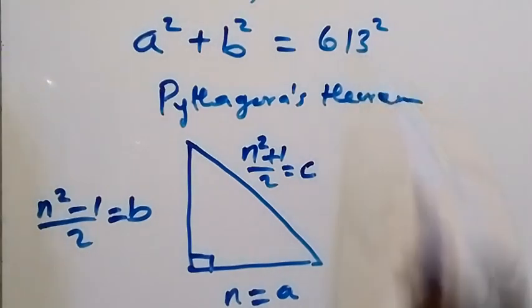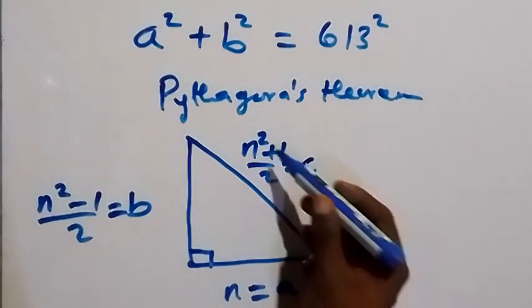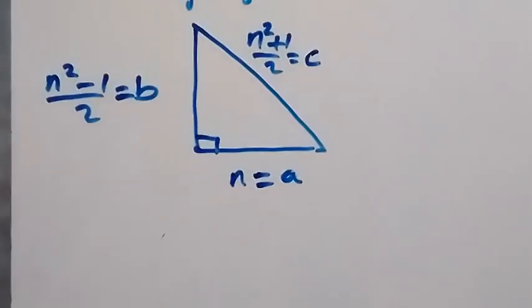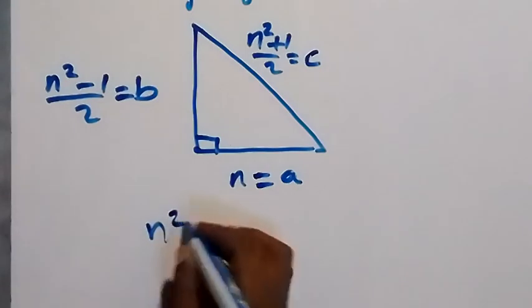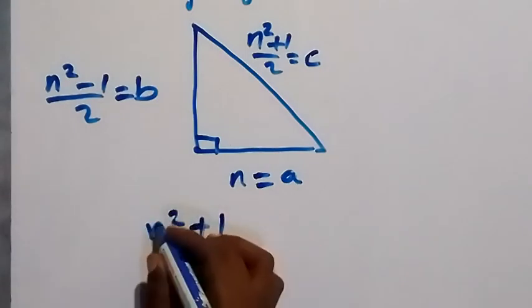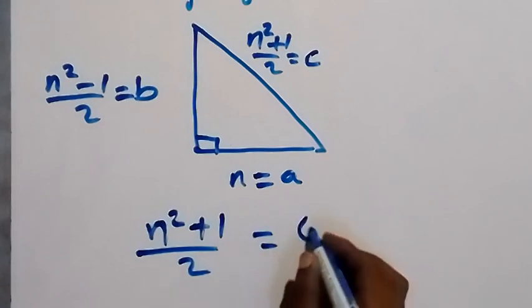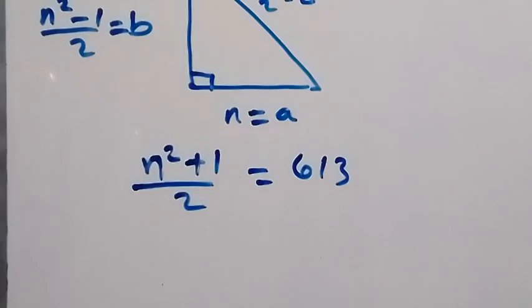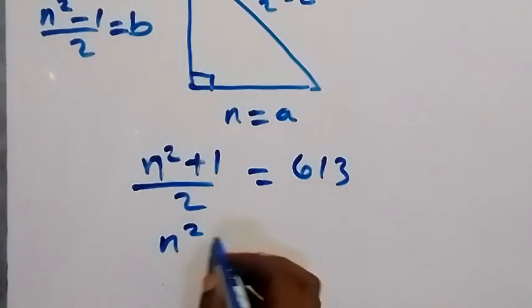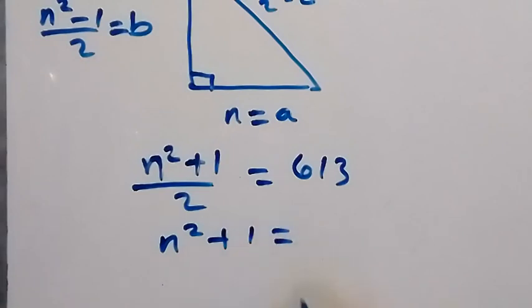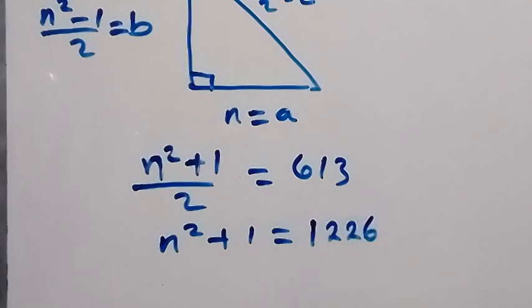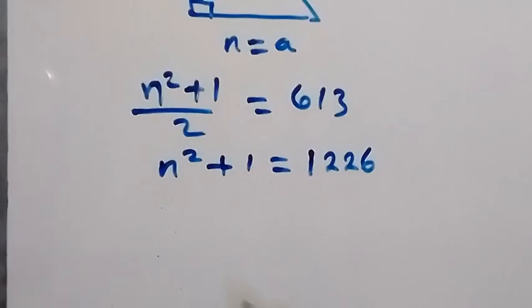From here we have our c to be 613. Then we can equate n squared plus 1 over 2 to c, and that will be n squared plus 1 over 2 equals 613. That gives us 1226. Then taking plus 1 here becomes minus, so we have n squared